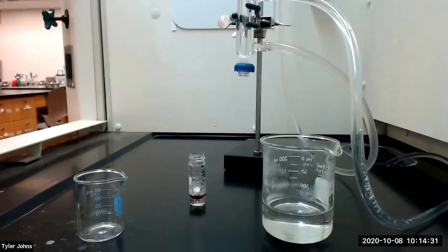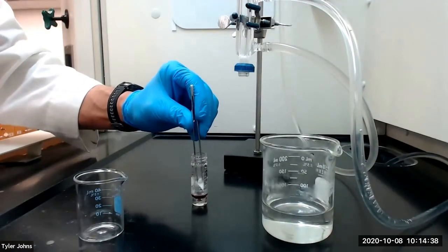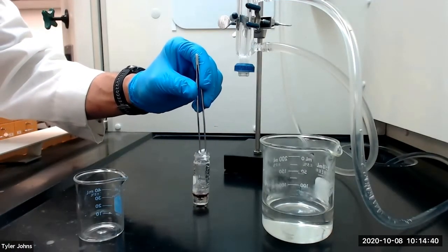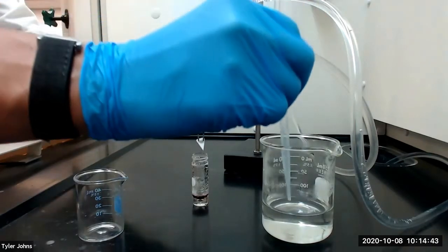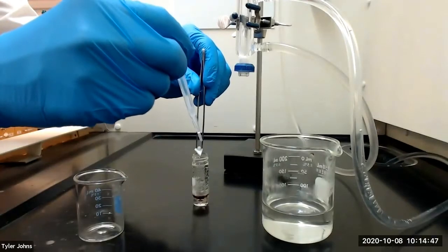We're going to remove the spin vane with forceps and rinse the spin vane with several drops of warm deionized water back into the conical vial.